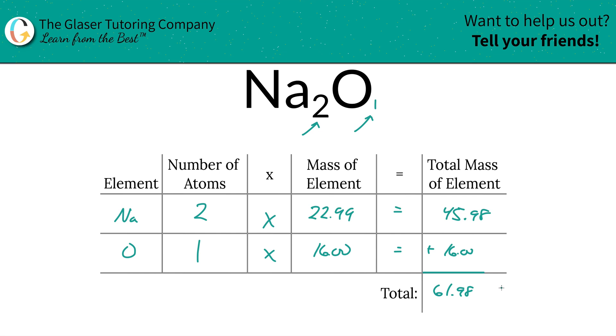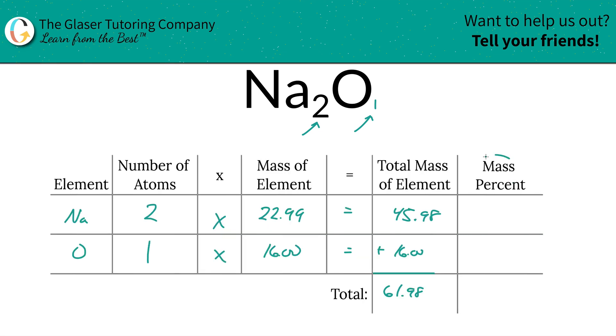Now I'm going to add a simple column to the table and calculating these percents are going to be easy as pie. So to calculate the mass percent of sodium, we're going to simply take the total mass of the sodium, the 45.98 units of mass, and we're going to divide it then by the 61.98 total units of mass for the entire compound. This is a simple percent, right? Part over whole times 100.